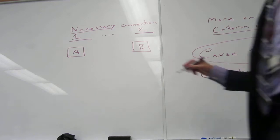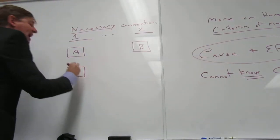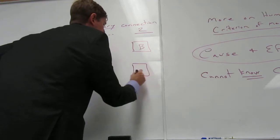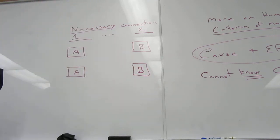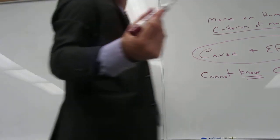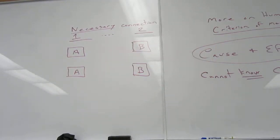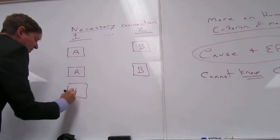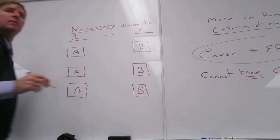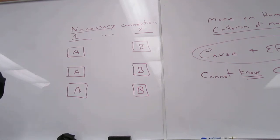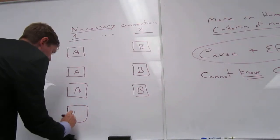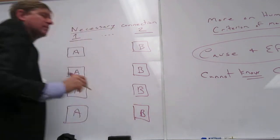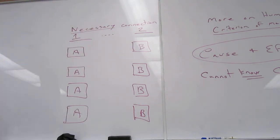However, if on the next instance A happens, and then not long after we witness B happening, we might be starting to think to ourselves, I wonder if this event A happening has anything to do with event B happening. Now, if it happens again, we're becoming more thinking more likely that there's something going on. We see it happen again. And then what will our minds do? And this is the key.